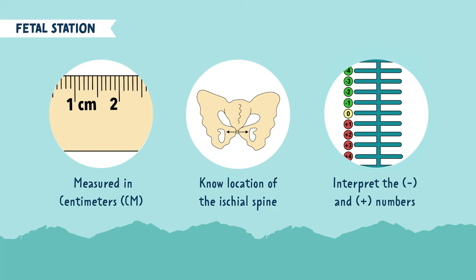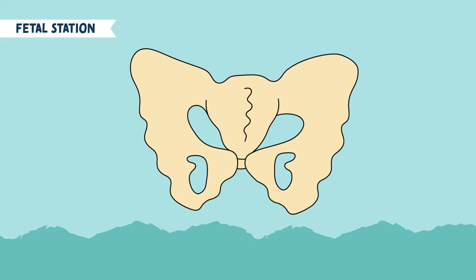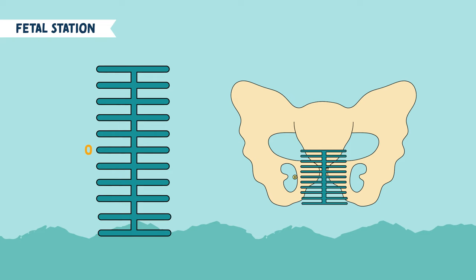You want to start off by finding the ischial spine. You have your left ischial spine and your right ischial spine, and if you draw a line in between these two, you get fetal station zero.